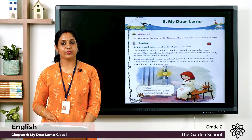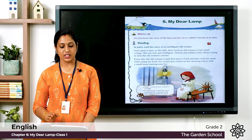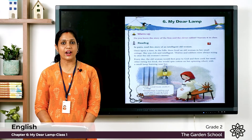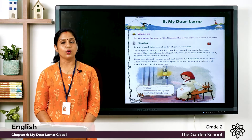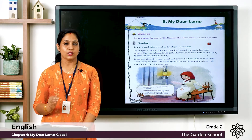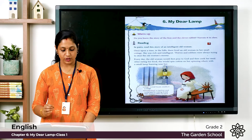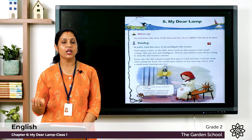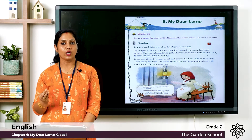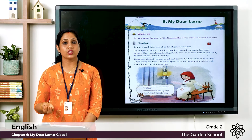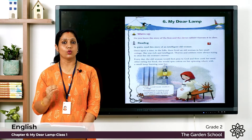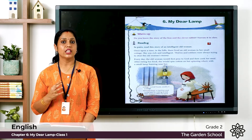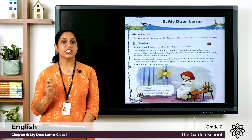Once upon a time in the hills, there lived an old woman in her small cottage. She was rich and intelligent. Thieves and robbers were always trying to steal the old woman's money. A cottage is a small house, usually in a village. She lived near the hills and was both wealthy and clever.